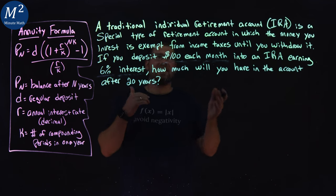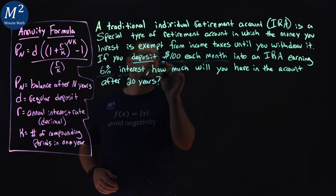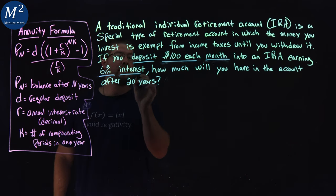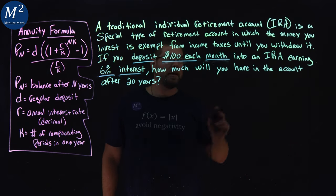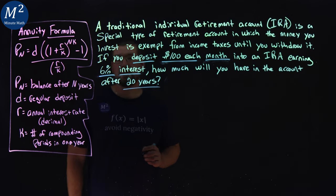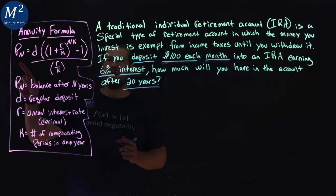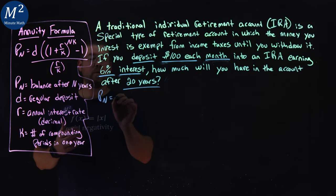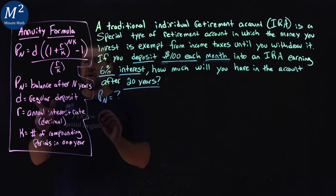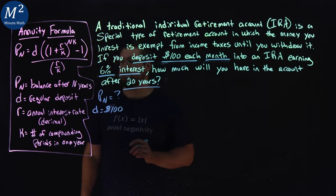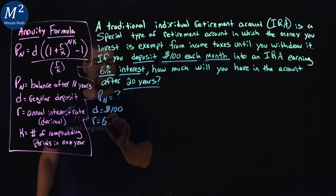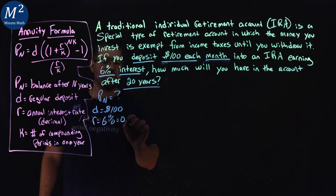Let's analyze different parts here, the key things. We're depositing $100 each month. Our account's earning 6% interest, and how much will we have in the account after 20 years? If we use our annuity formula here, we don't know the end balance, the P sub n. That's what we want to find. We do know our regular deposit of $100. We have an annual interest rate here of 6%, which is a decimal of 0.06.